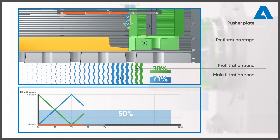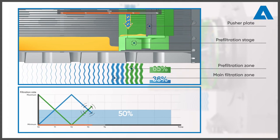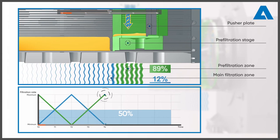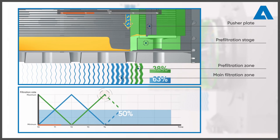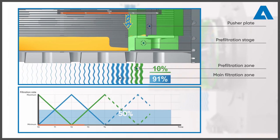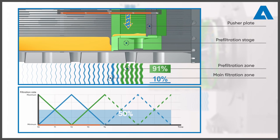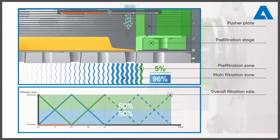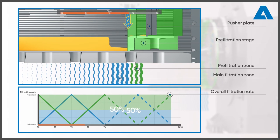The pre-filtration stage pushes the cake out of the main filtration zone and compresses it at the same time. As a result, the decreasing filtration rate in the main filtration zone is compensated by the increasing filtration rate in the pre-filtration zone. There is always a free filtration surface available and a maximum filtration rate is guaranteed at all times.